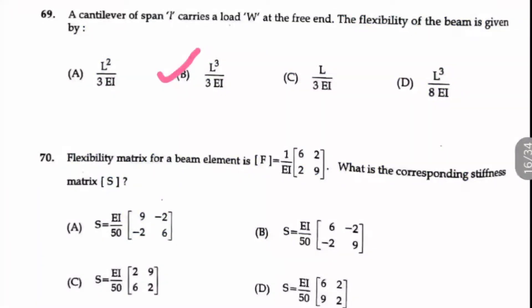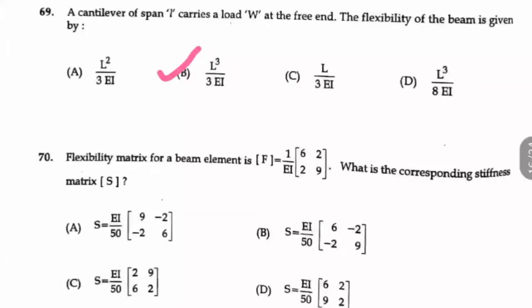Question number 70: The flexibility matrix for a beam element is 1/EI into matrix [6, 2; 2, 9]. What is the corresponding stiffness matrix? For stiffness matrix, we will just write the inverse of the flexibility matrix and divide it by the determinant of that matrix. If you take the determinant, it is 50, so EI/50 will be the first term.